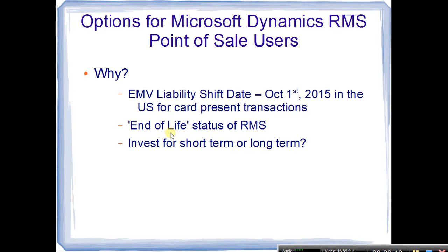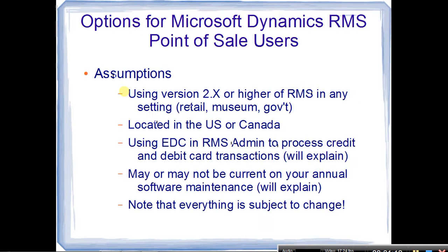Why should you be looking at a course of action? We've got a couple of things going on. First, we have our EMV liability shift date coming up, which is October 1st, 2015 in the United States for card-present transactions. And we have the end-of-life status for RMS. So you have to consider whether you're looking at a short-term fix or a long-term solution — something that will last the next five to seven years.